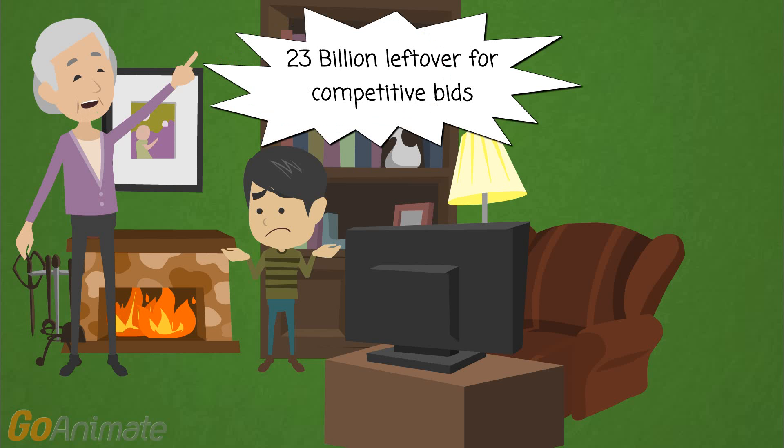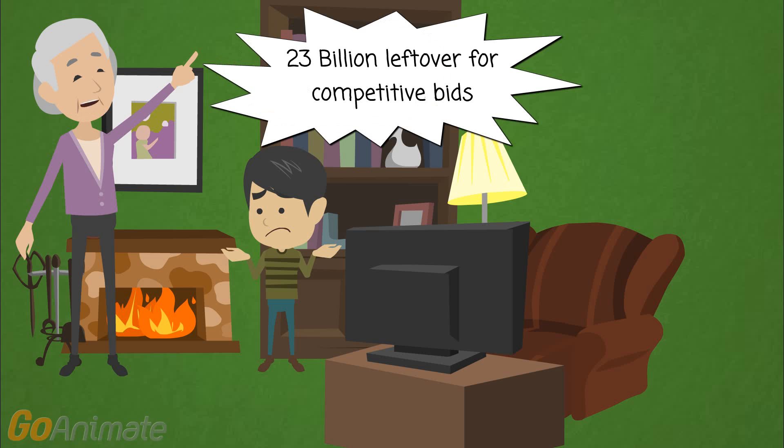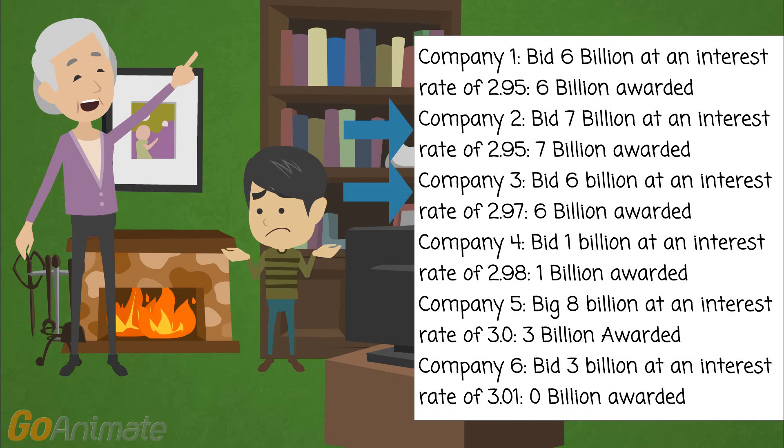In the competitive auction, each bid includes the lowest interest rate the bidder is willing to receive. Each bid also includes the amount of Treasuries they want. For example, Company 1 who stated the lowest interest rate and lowest amount gets their bid accepted. Then Company 2 gets their bid accepted. After they accept Company 1 and 2's bids, the government has $10 billion remaining. Now Company 3 gets their bid accepted at an interest rate of 2.97.